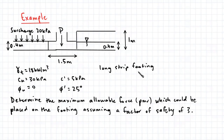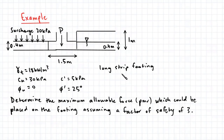We're dealing with a long strip footing with a width of 1.5 meters. The question asks us to determine the maximum allowable force per meter run — per unit length because we're dealing with a strip footing — assuming a factor of safety of 3.